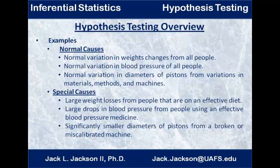Suppose we're measuring weights of people. There's going to be some normal variation in weight changes over time — people normally go up and down a little bit in their weight. But if we're testing how effective a diet is, and there are large weight losses from the people on that diet — much larger than the normal weight losses you might see from anybody in the population or from a control group — then we know that the diet was effective. If it's sufficiently more of a weight loss than the average person, we know this is a special group from the diet.